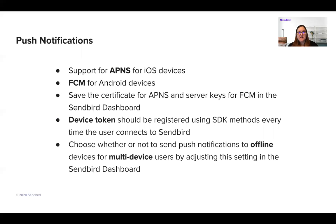For APNS, you're going to save the certificate on the Sendbird dashboard, and for FCM, you're going to save the server key on the Sendbird dashboard. There's a notification section on the dashboard to do that. The user has to specifically have a device token registered for them, and this is possible through the SDK.